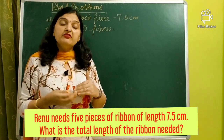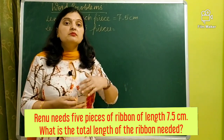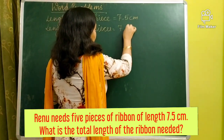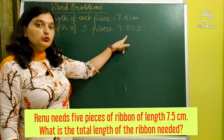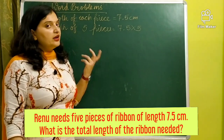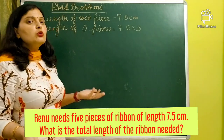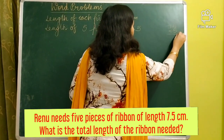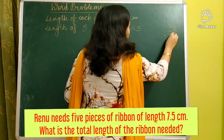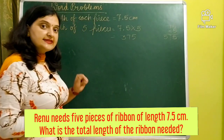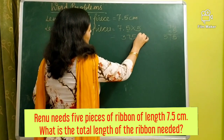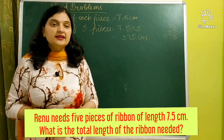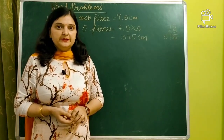She needs five pieces, so she needs more ribbon. For more, we will multiply. So length of five pieces — we multiply 7.5 by 5. We have to multiply a decimal number with a whole number. Without decimal, we multiply 75 by 5 in our rough part. After multiplying, the product is 375. Now we place the decimal — there is only one digit after decimal — so our answer is 37.5 centimeters. The length of five pieces of ribbon is 37.5 centimeters.